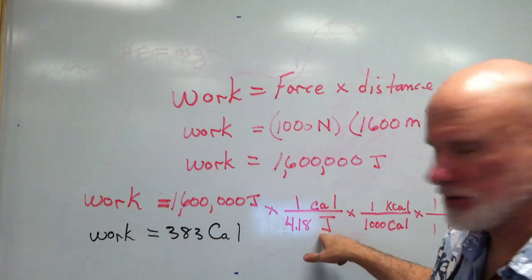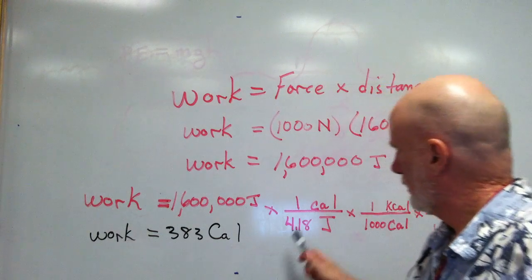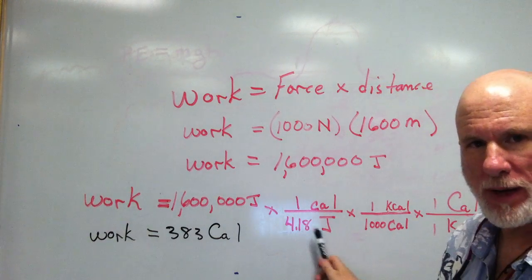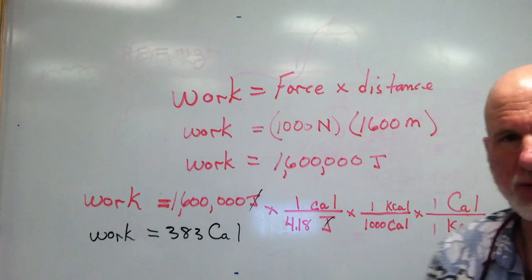So, divide by joules, multiply by calories, 4.18 joules per calorie. So the joules cancels.